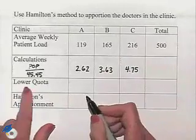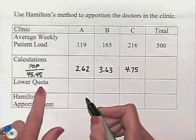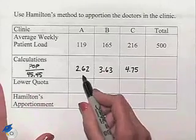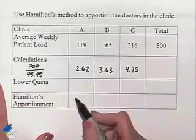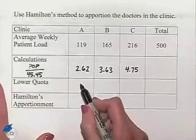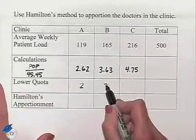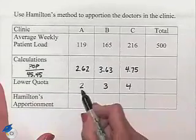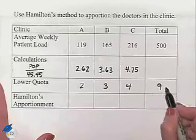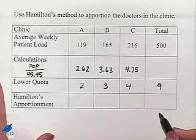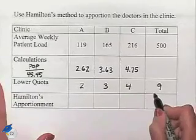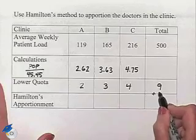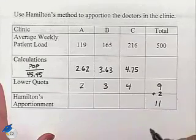Now we're going to come up with our lower quotas, and we do that by truncating. That is, we only pick up the whole number part of this value. So we're going to have 2, 3, and 4. However, notice that this is only going to give us 9 doctors. So we're going to now have to add 2 in order to come up with our total of 11 doctors.